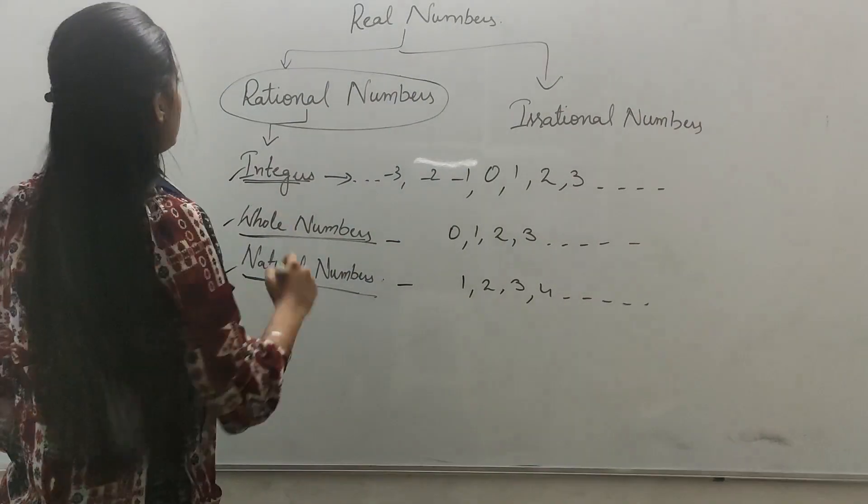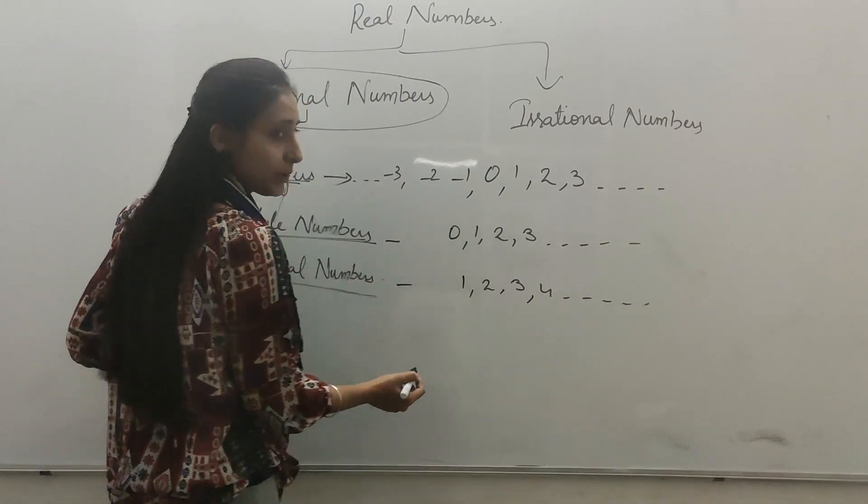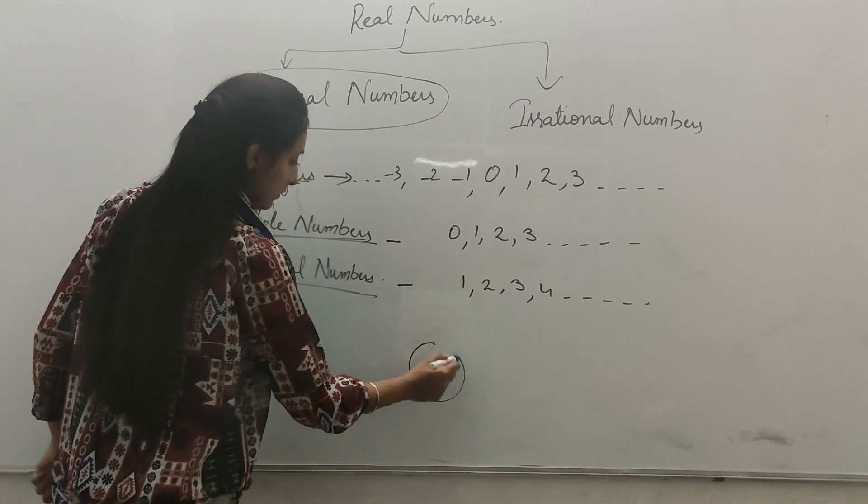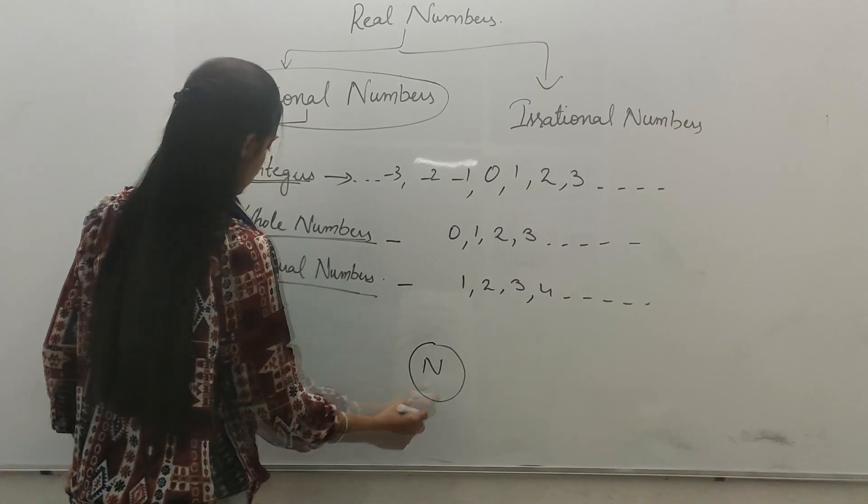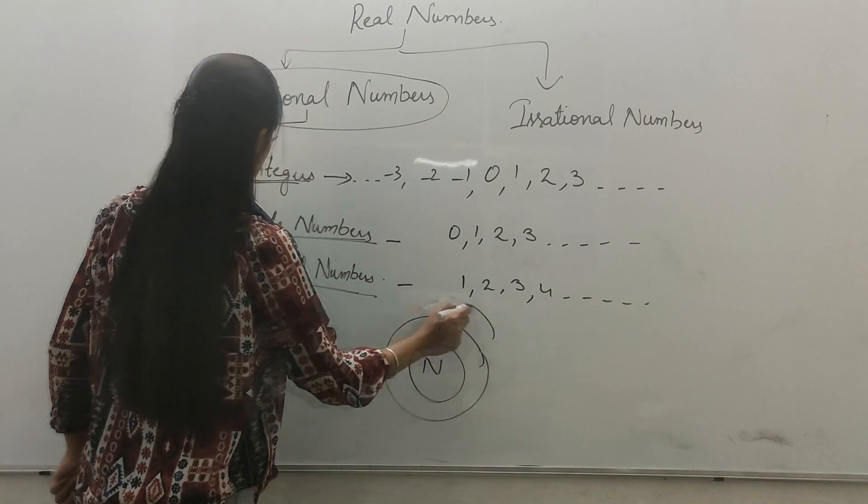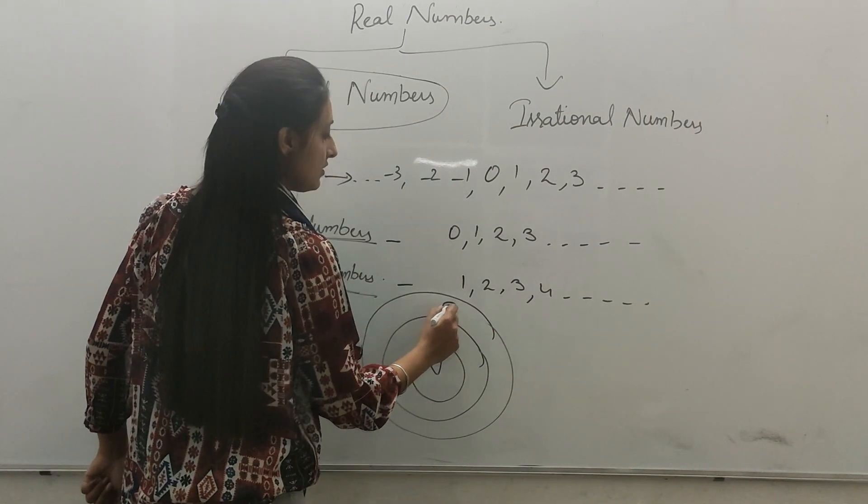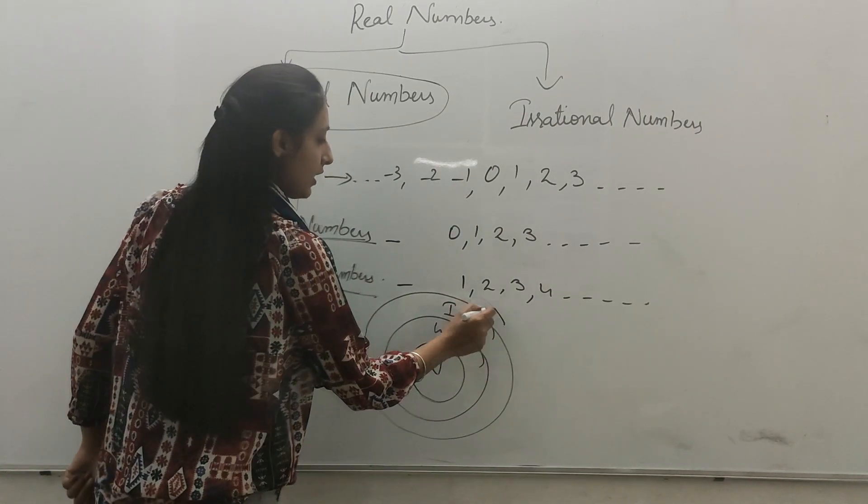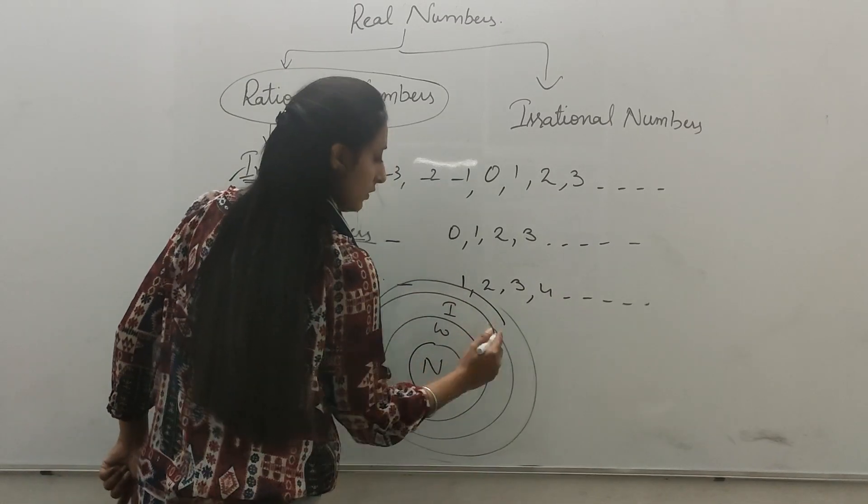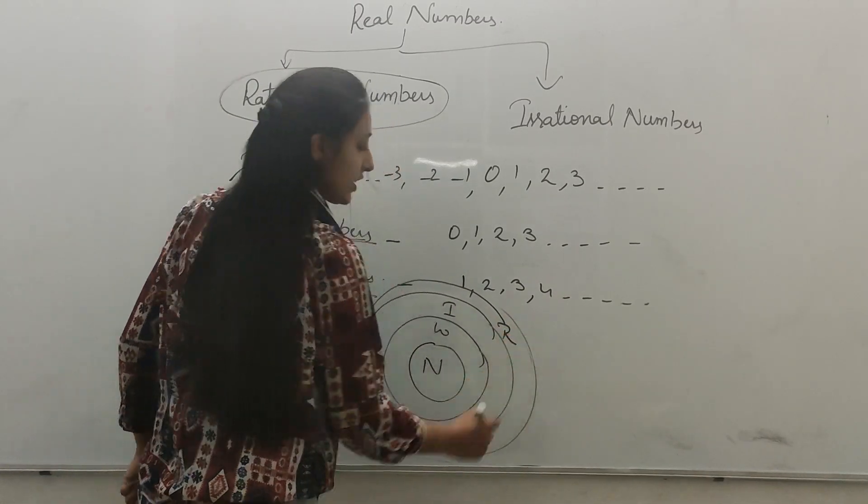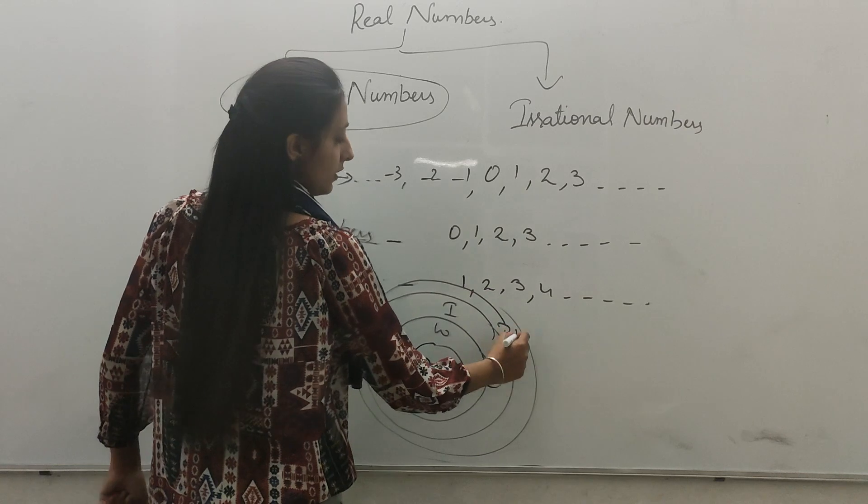Clear? So here we can compute it by diagram. Natural numbers, then whole numbers, then integers. All these are called rational numbers.